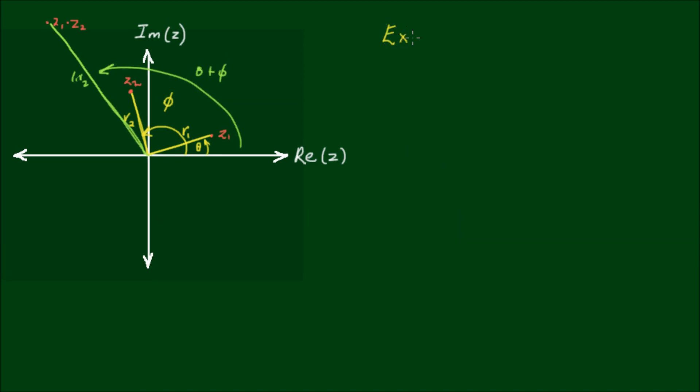Let's do an example. So suppose I have a complex number z1 in polar form of 3 cis π on 3, and another z2 is equal to 2 cis π on 2.